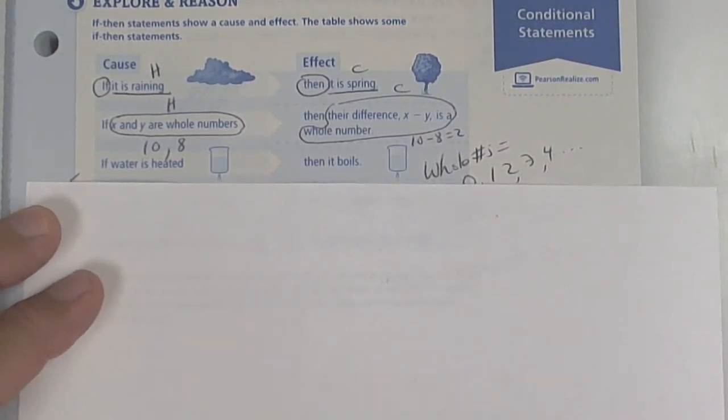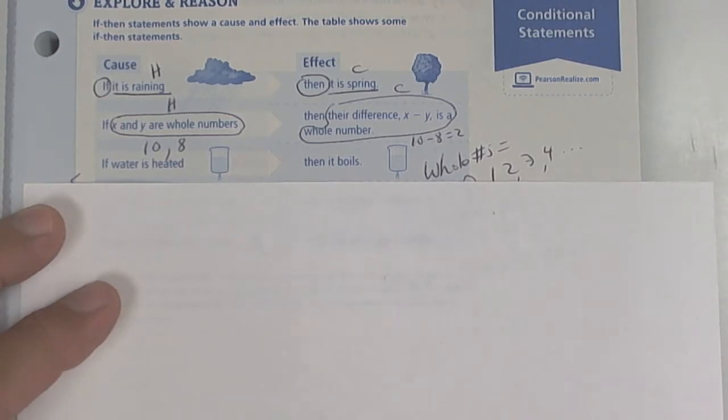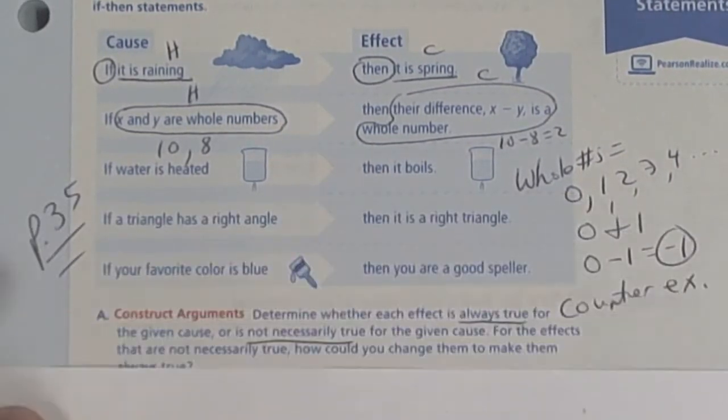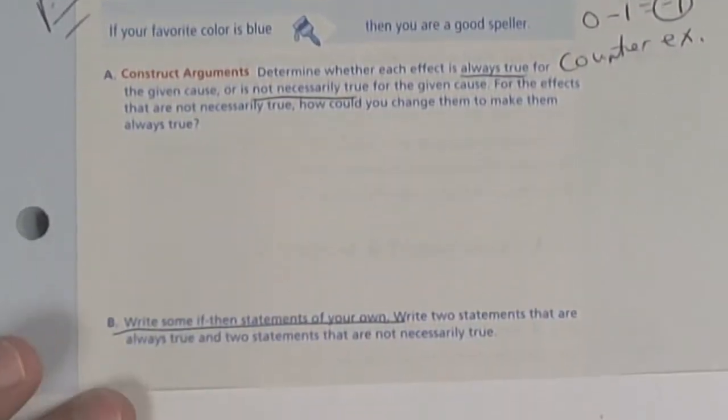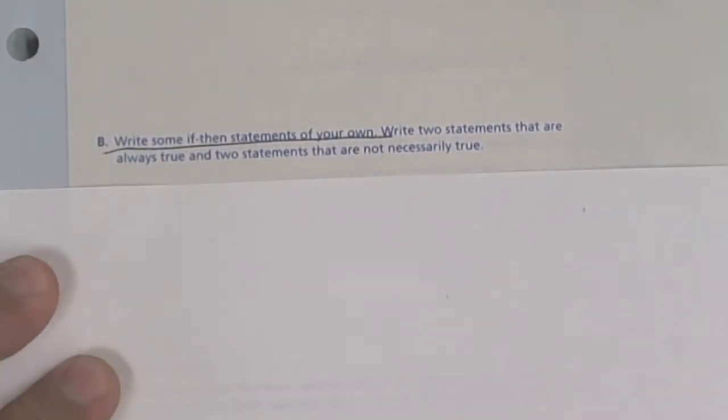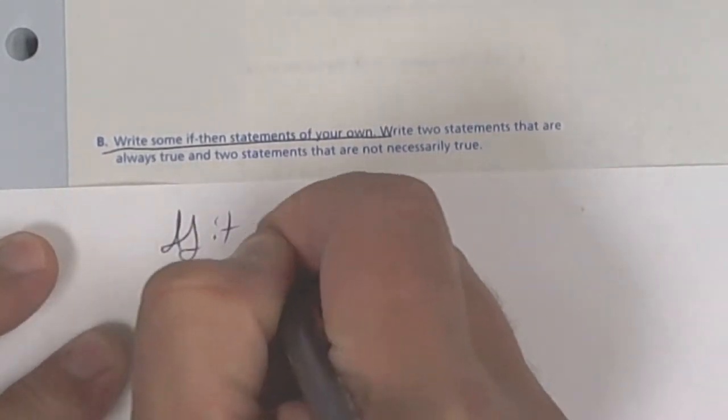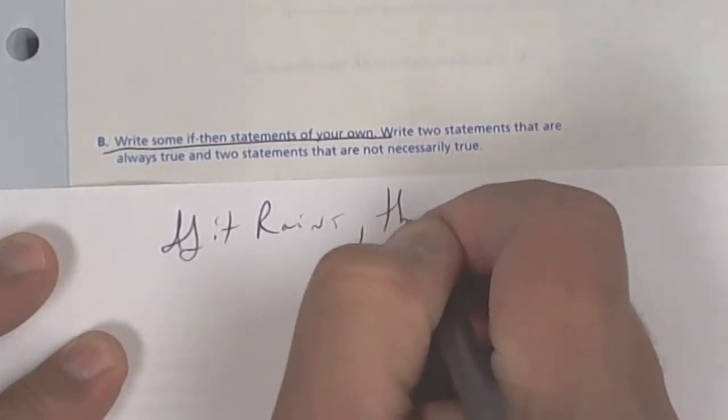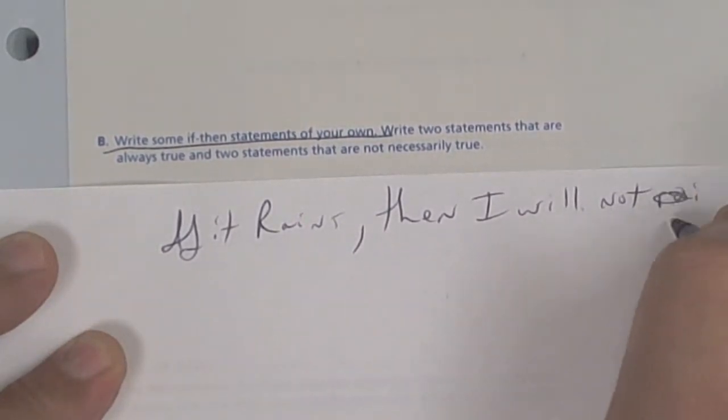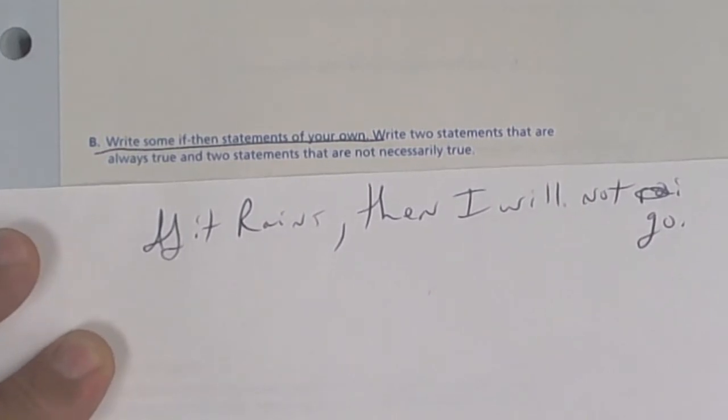Let's take a look here. It says if-then statements cause and effect. So if water is heated then it boils. Well not necessarily it doesn't always have to boil if you heat it up. Now if you get it to a certain temperature 212 degrees I guess it would boil. Here it says write some if-then statements on your own. Can you think of an if-then statement on your own? So write something right now and think of something. I would say if it rains then I will not go because if it's raining I'd just as soon stay inside. That would be an if-then statement right there.